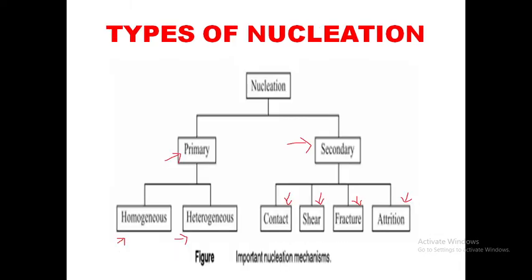Nucleation is classified into two types: primary nucleation and secondary nucleation. Primary nucleation is the formation of new crystals, independent of the presence of other crystals in the medium. It is classified into two types: homogeneous and heterogeneous. Heterogeneous nucleation has its origin in clusters of solute molecules that form in a supersaturated solution. Whereas heterogeneous nucleation is the formation of crystals of a solute on small suspended foreign solid particles or on the surface of the crystallizer.